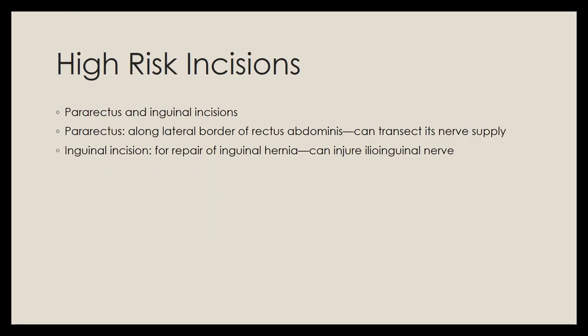The abdominothoracic incision provides access to both abdominal and thoracic cavities. A paramedian abdominal incision is extended upward and laterally into the seventh, eighth, or ninth intercostal space, transecting the costal cartilage and incising the diaphragm. On the right side this is used for liver resection; on the left side for access to the lower esophagus or proximal stomach located within the thorax. High-risk incisions include the pararectus incision, which can transect the nerve supply of the rectus abdominis predisposing to incisional hernia, and the inguinal incision for hernia repair, which can injure the ilio-inguinal nerve.